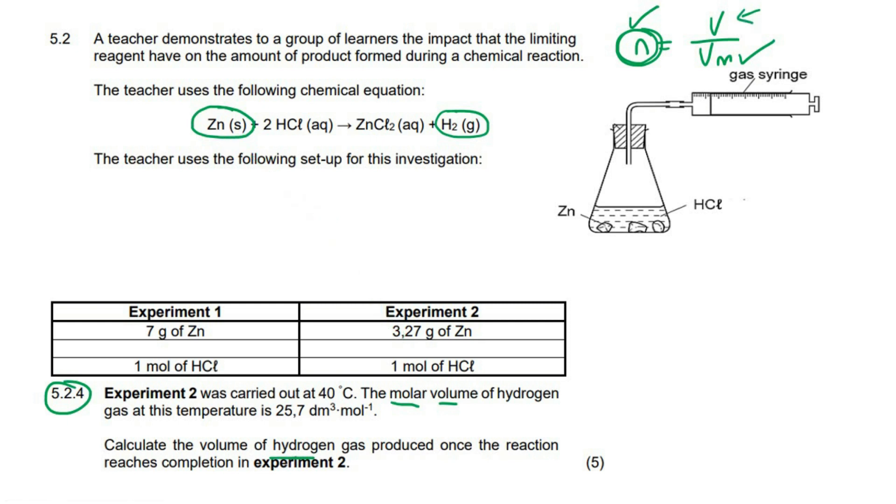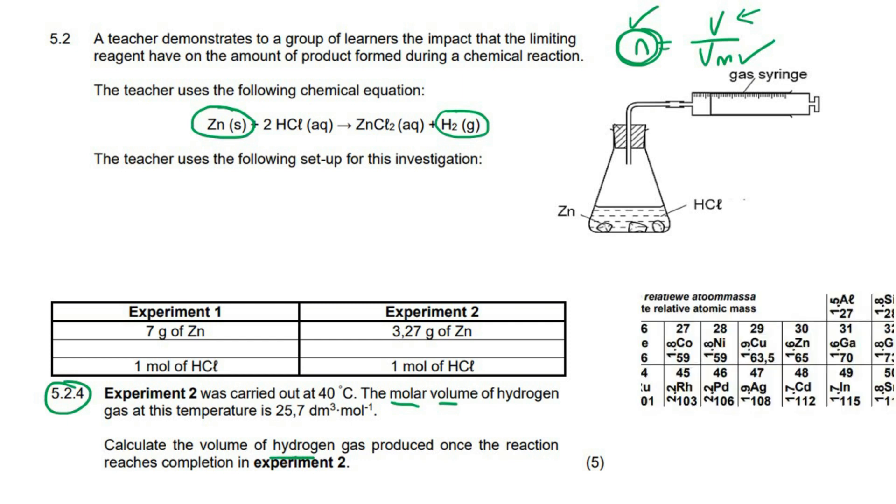So from our periodic table, we know that zinc has a mass of 65. So we can say N equals M over capital M. So we can say N equals 3.27 over 65, and that gives us, we can round this to 0.05 moles.